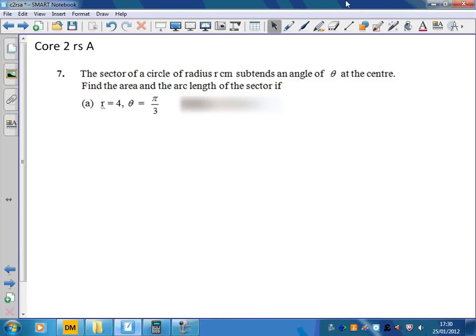Question 7 is all about sectors, and I'm going to look at 7a. So I've got a sector of a circle with radius r, which in this case is 4, and an angle at the center of theta, which in this case is pi over 3. We want to know the area and the arc length, so let's start with the arc length.